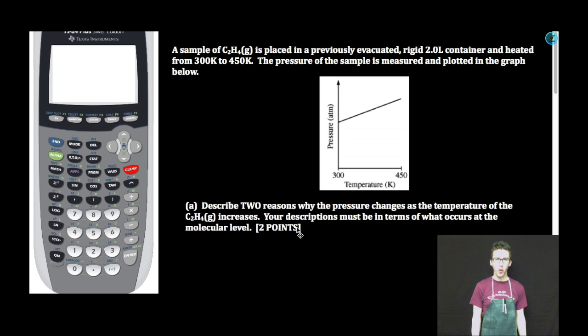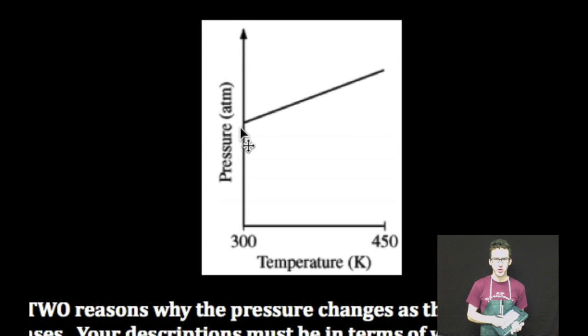Boom! What's up my chemistry people? Who is ready for a thriller of a free response practice? A sample of C2H4 gas is placed in a previously evacuated, rigid 2.0 liter container and heated from 300 Kelvin to 450 Kelvin. The pressure of the sample is measured and plotted in the graph below. Increase of pressure.